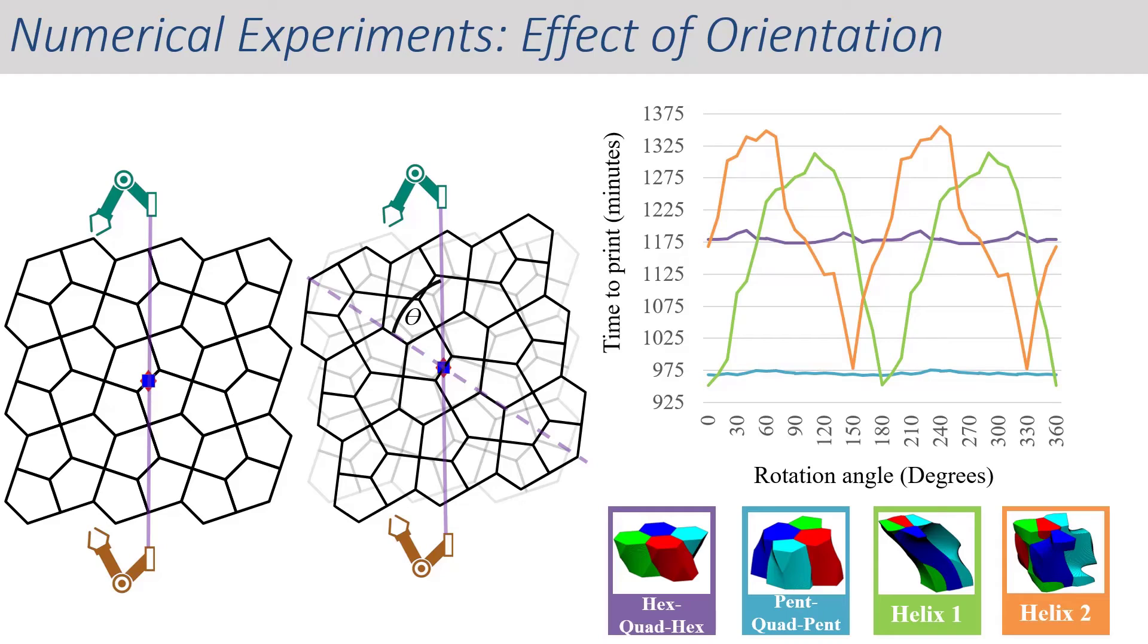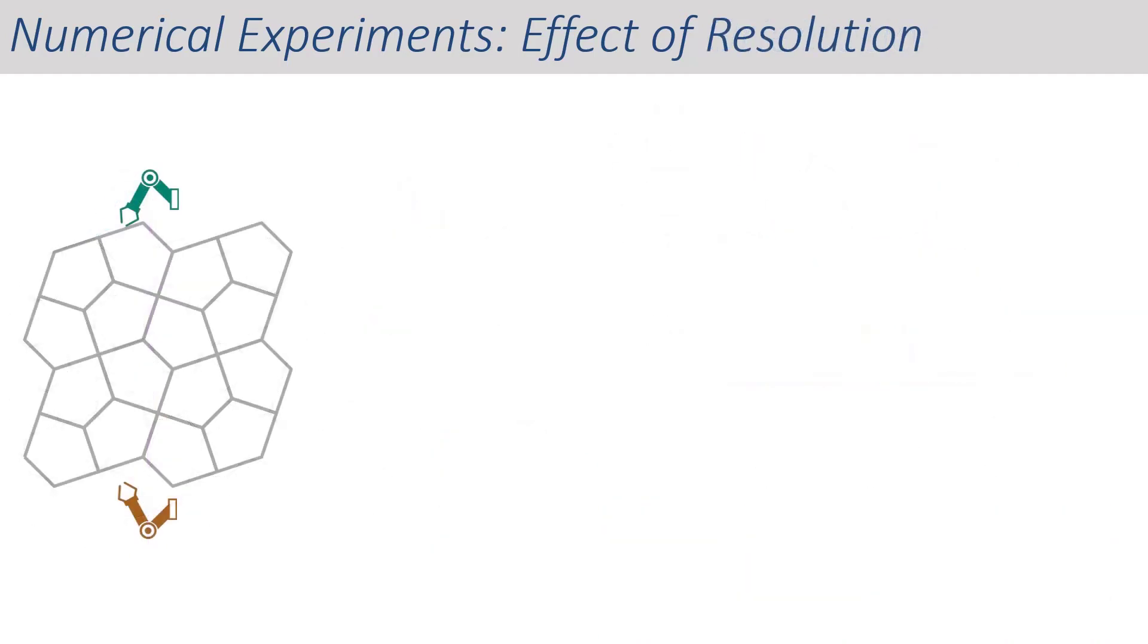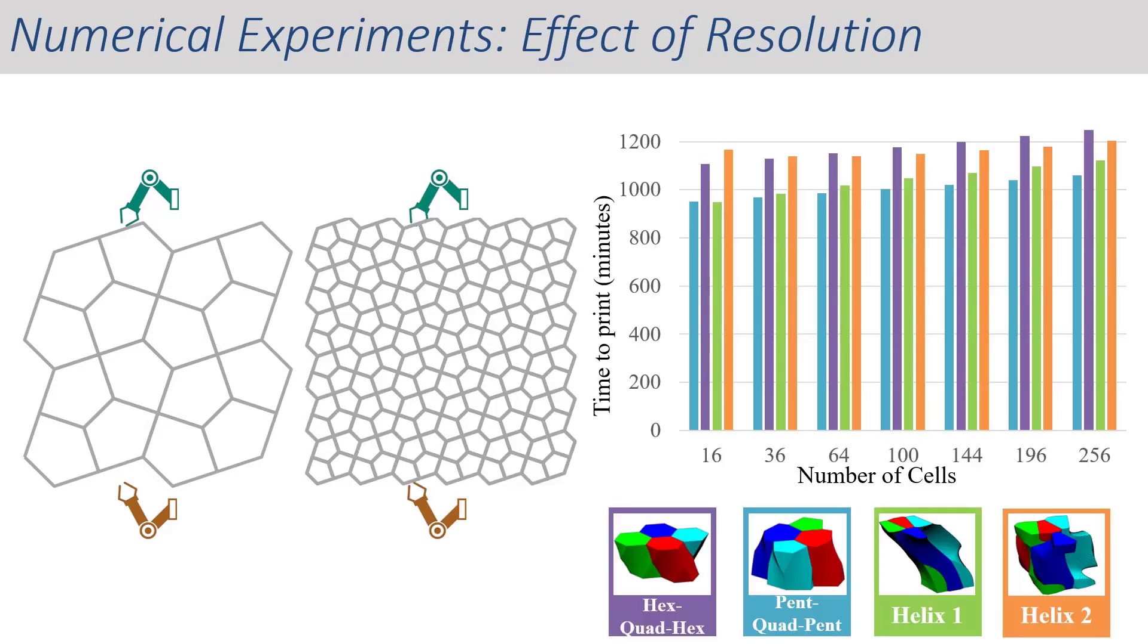On the other hand, the Lofts based on helical control curves exhibited a clear cyclical relationship between the angle and printing time. We also studied the effect of cell resolution on printing time. In most cases, there is a steady increase in time to print with only helix 2 time decreasing after a few cells are added because of a more optimal cell distribution.